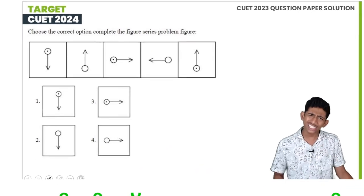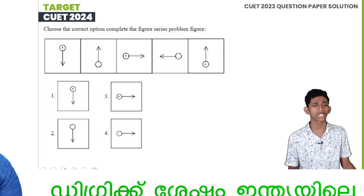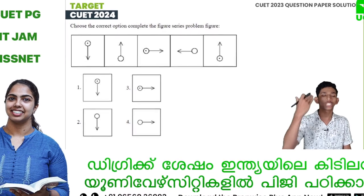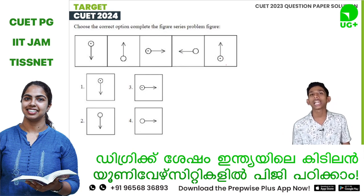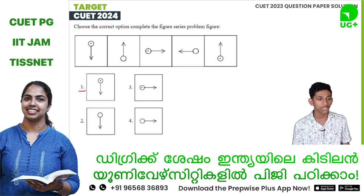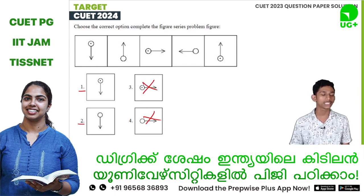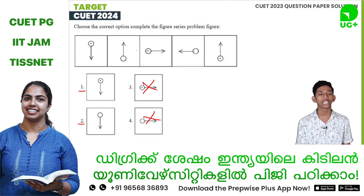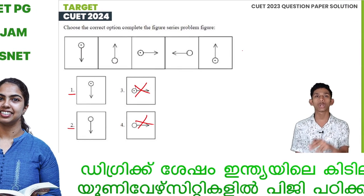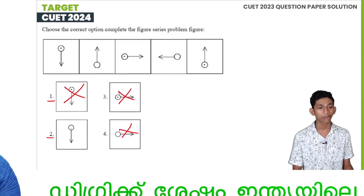The next question is a very easy question about mirror images or dice. If you look at the opposite side, the left side: there are no dots in the first figure, no dots in the next, and no dots after that. The second option is two. The answer is option A or B.